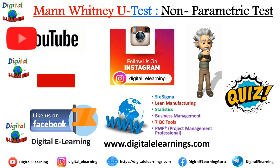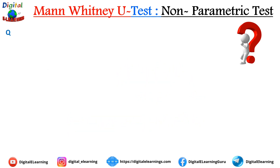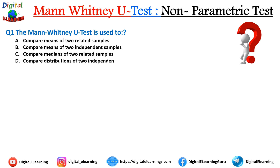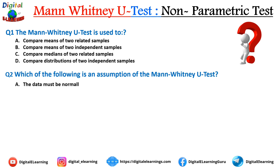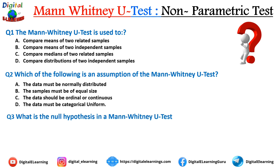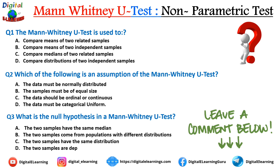Now it's quiz time. Question 1: The Mann-Whitney U test is used to — (a) compare means of two related samples, (b) compare means of two independent samples, (c) compare medians of two related samples, or (d) compare the distribution of two independent samples. Question 2: Which of the following is an assumption of the Mann-Whitney U test — (a) data must be normally distributed, (b) samples must be of equal size, (c) data should be ordinal or continuous, or (d) data must be categorically uniform. Question 3: What is the null hypothesis in the Mann-Whitney U test — (a) two samples have the same median, (b) two samples come from populations with different distributions, (c) two samples have the same distribution, or (d) two samples are independent. Leave your answers in the comments below.